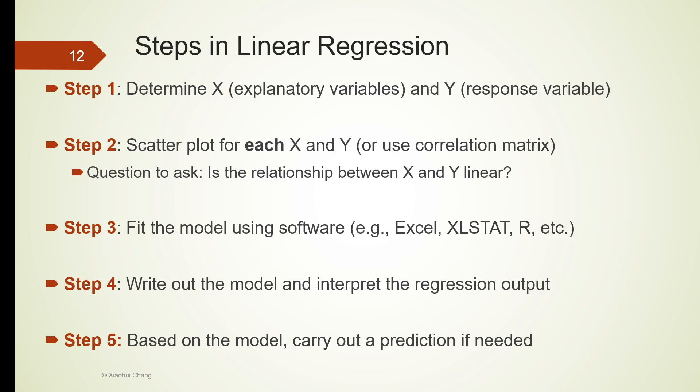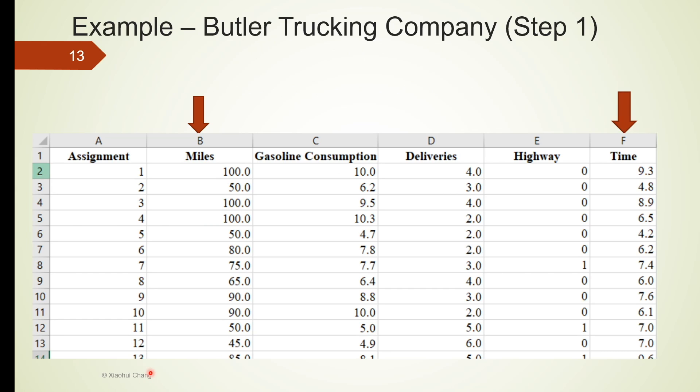I'm going to use the trucking company example to demonstrate the steps in linear regression. The company manager would like to predict the total travel time for their drivers. So the variable he tries to model or explain is the time variable in column F. There are a few variables that may possibly affect time. For this video of simple linear regression, I will only focus on one of the variables, which will be miles in column B. If the driver has to drive far for assignments, the total travel time is very likely to be high as well. So in step one, we identify the independent variable as miles and the dependent variable is time.